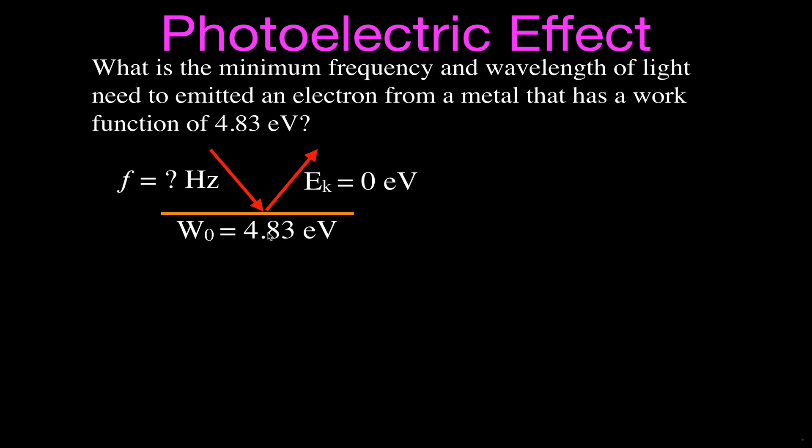All we want to do is kick those out, the minimum amount of energy we need to kick those out, without giving them any kinetic energy. So here's the equation that we used. It says that the kinetic energy is equal to the energy in light, Hf, Planck's constant times the frequency, minus the work function.